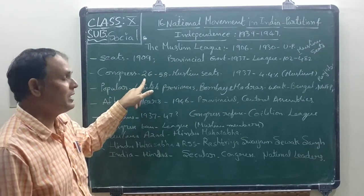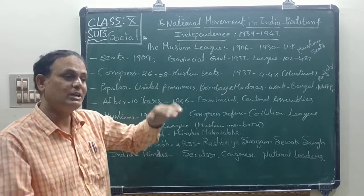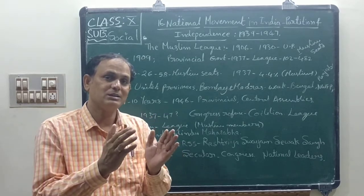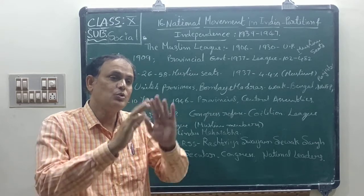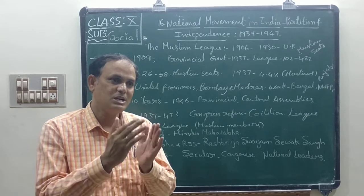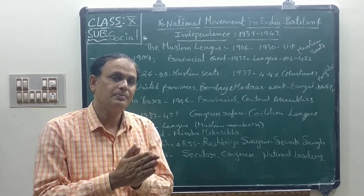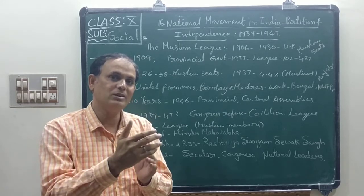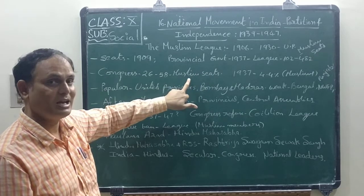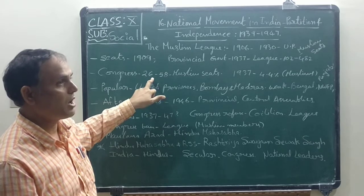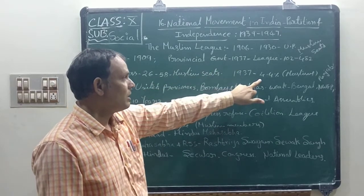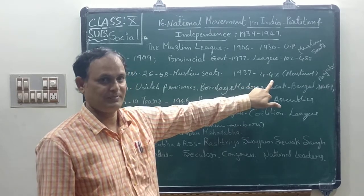Congress also won 26 seats out of 58 seats, even in Muslim areas. This is because the Indian National Congress was actively participating for the unity of our country. Even at the initial stage, many Muslims also believed it is not a religious party but our Indian party. That is why initially even Muslims supported the Indian National Congress. At first, the Muslim League got only 4.4% of seats in the 1937 elections.